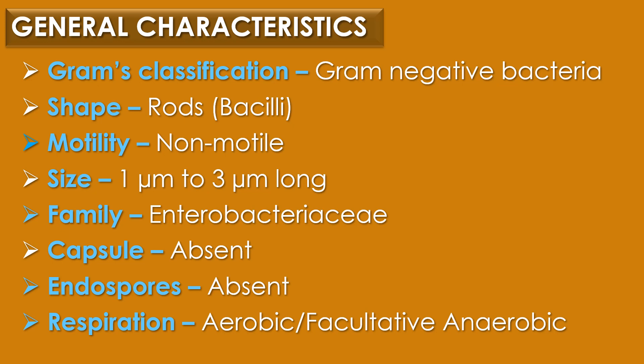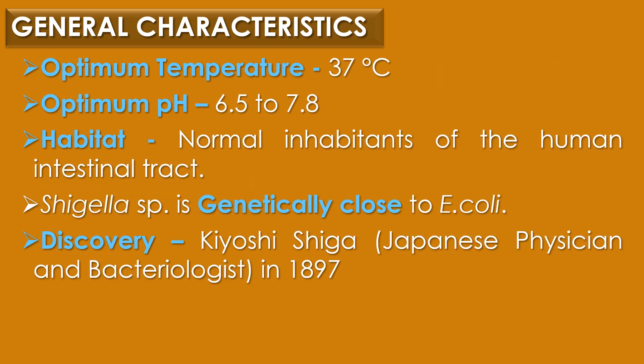First, general characteristics of Shigella species. Shigella is a gram-negative rod-shaped bacilli and it is non-motile. The size of Shigella ranges from 1 µm to 3 µm long. Shigella belongs to the family Enterobacteriaceae. Both capsules and endospores are absent. The mode of respiration observed in Shigella is aerobic or facultative anaerobic respiration. The optimum temperature for cultivation is 37°C and optimum pH is 6.5 to 7.8. Shigella are normal inhabitants of the human intestinal tract.